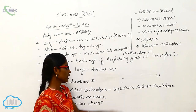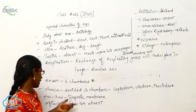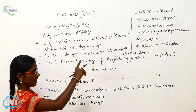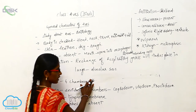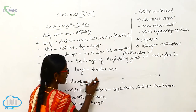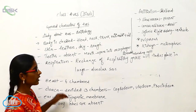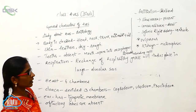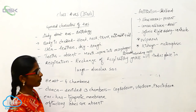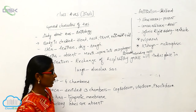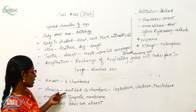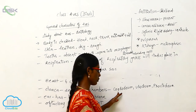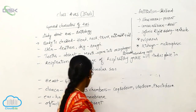The lungs have alveolar sacs. The heart is four-chambered. Sinus venosus is present and conus arteriosus is absent. The systemic right artery is elongated from the ventricle. The cloaca is divided into three chambers: coprodium, urodium, and proctodium.